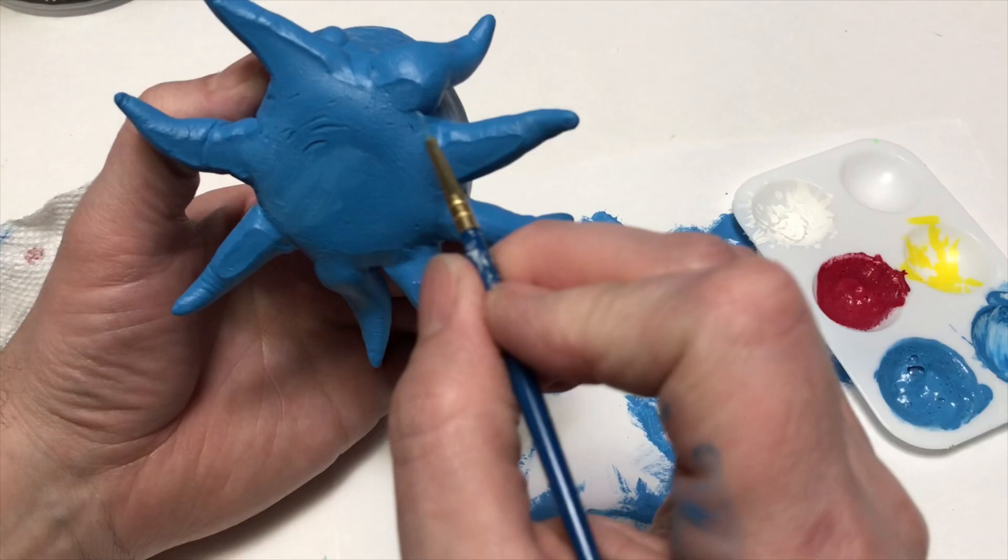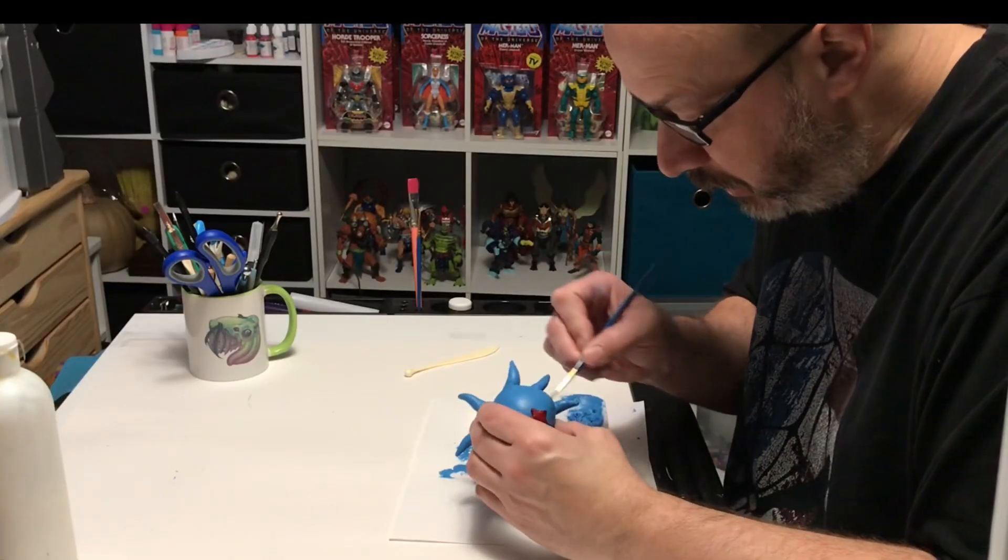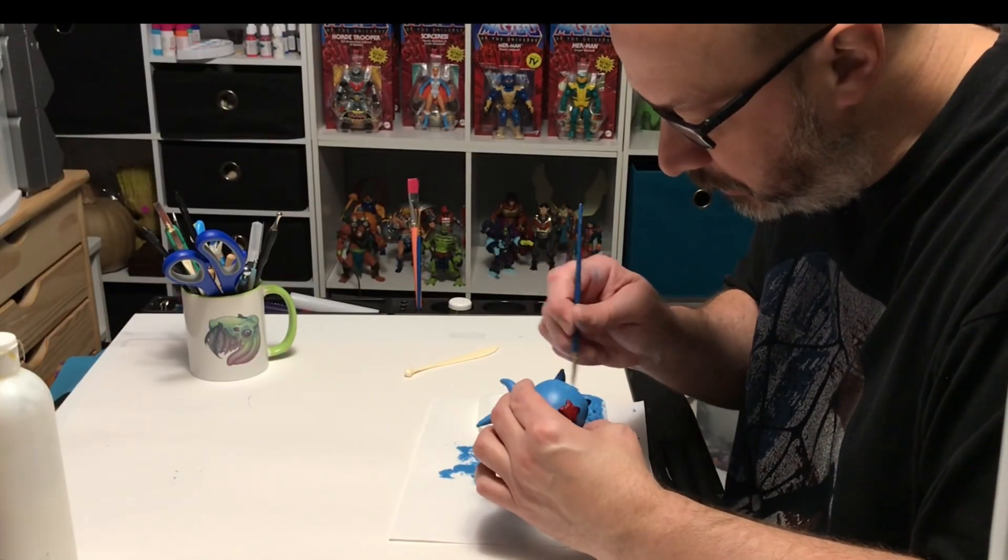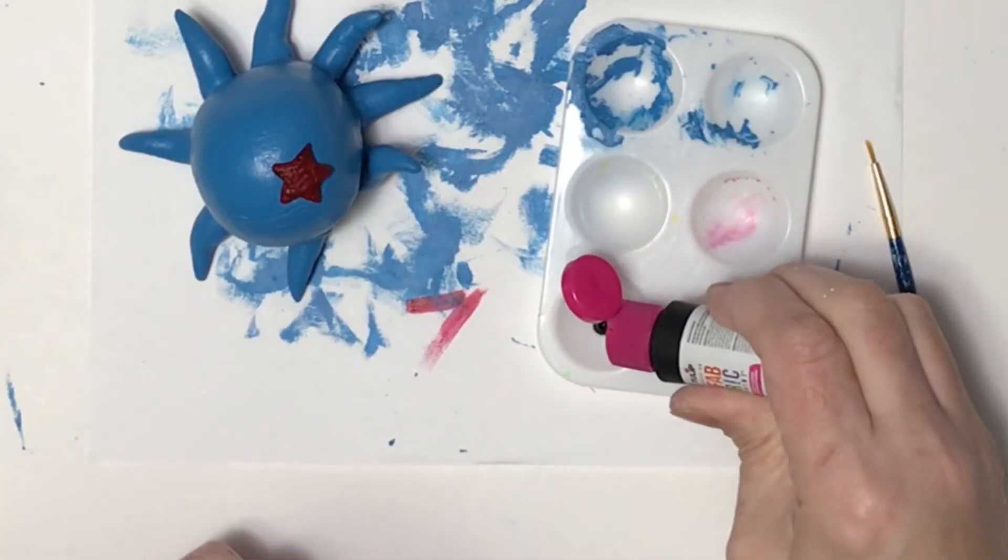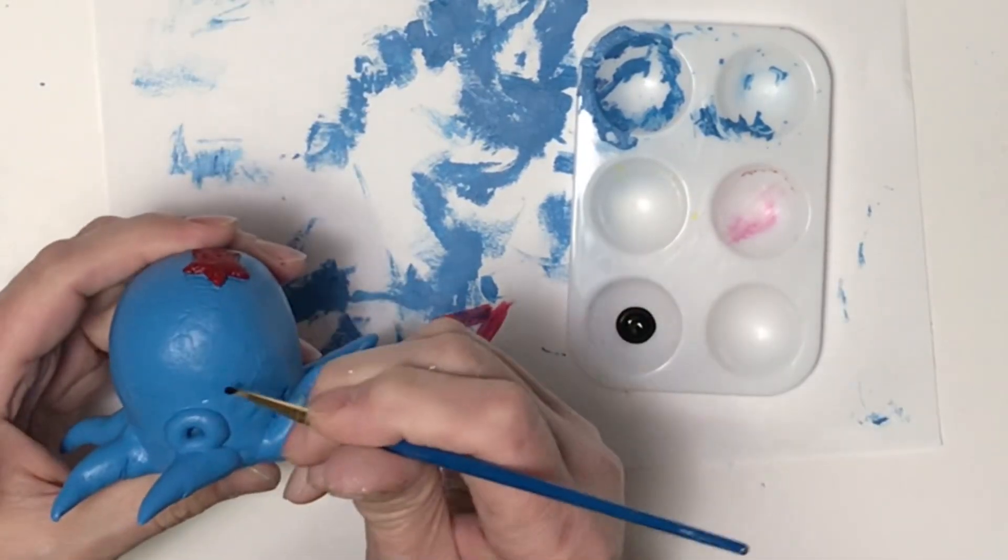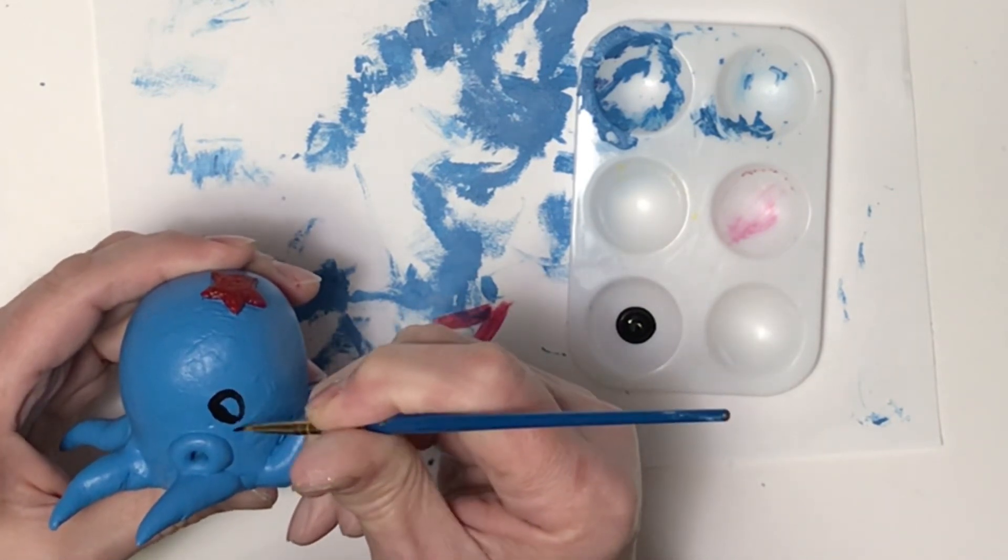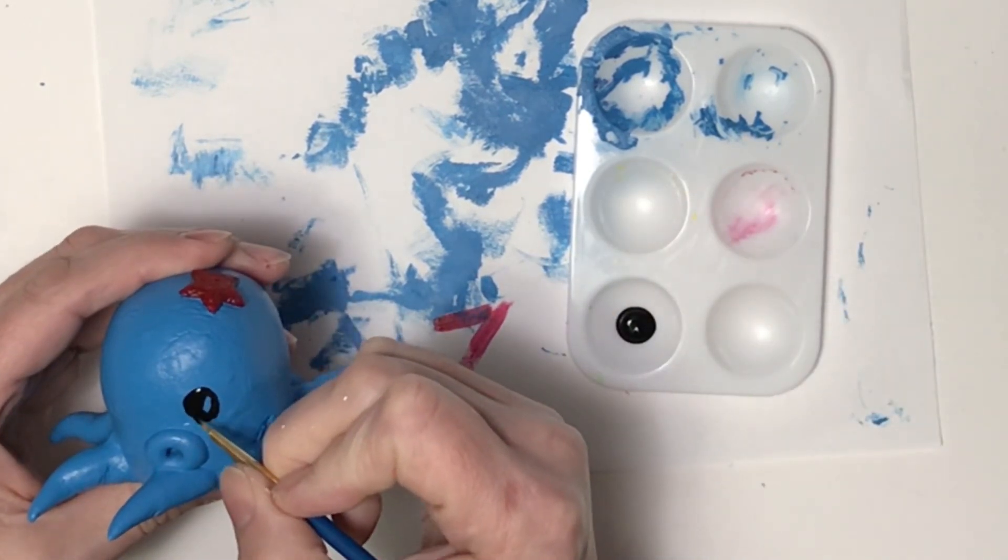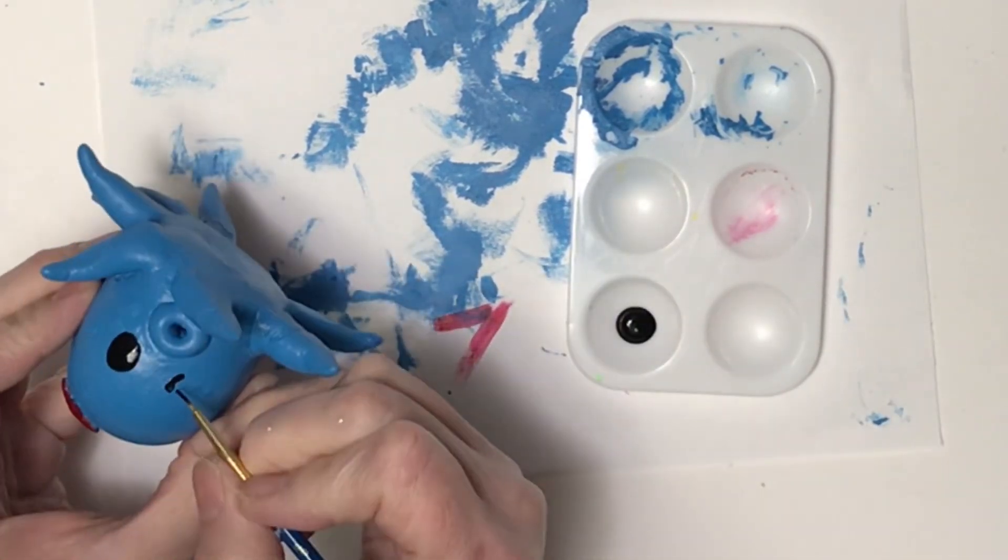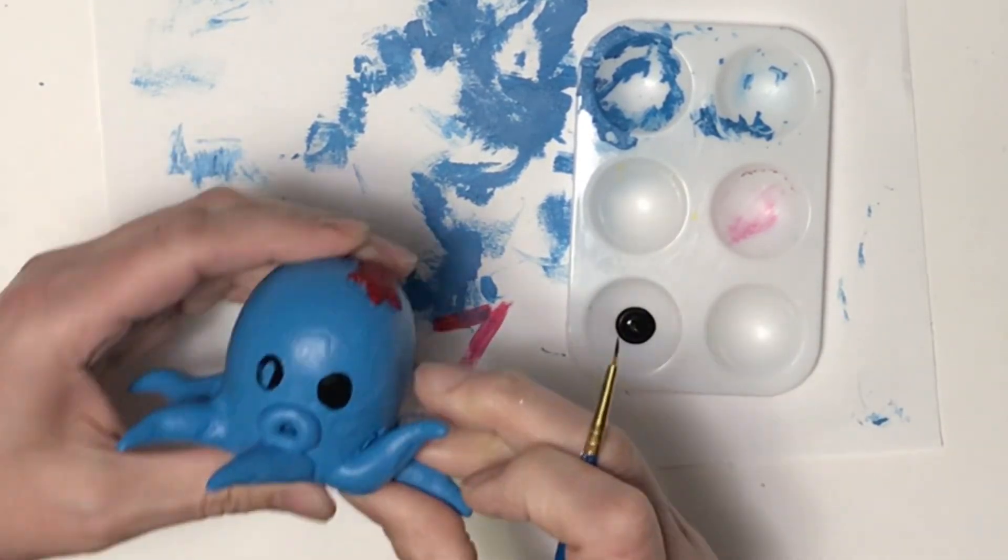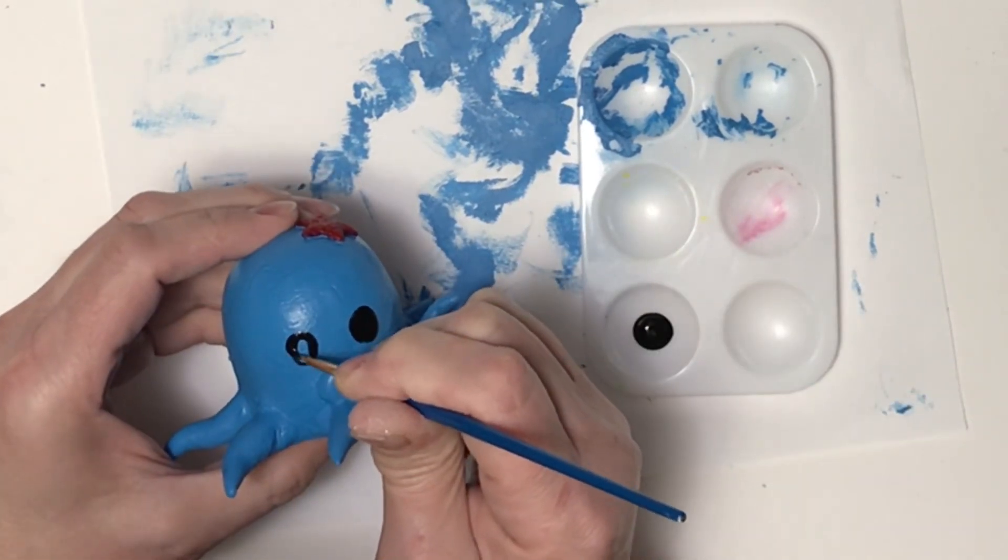What I did notice with this acrylic paint when I mixed it with the fabric medium is it dried or gelled up really quick. Now for the eyes, I am just using the fabric paint I already had. What I noticed when I was doing my little squishy monster is the black and white were much more opaque than the colors. So I thought I could do that for the eyes and just paint these on because I wasn't happy with the sculpted eyes. I'm just doing a black base and then adding some white to it.